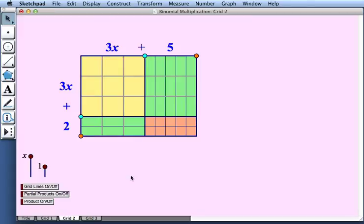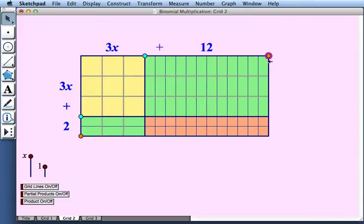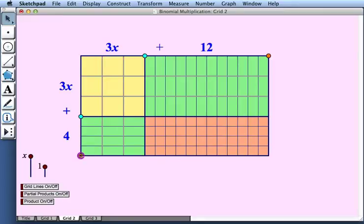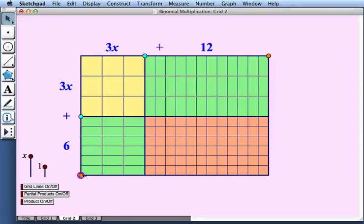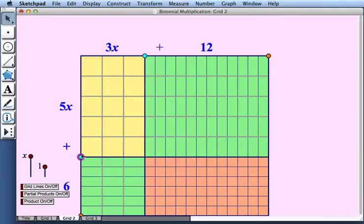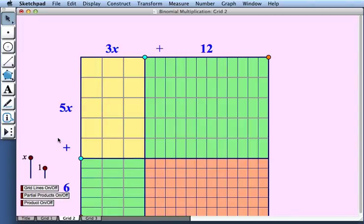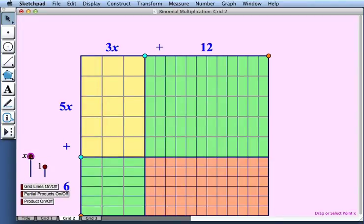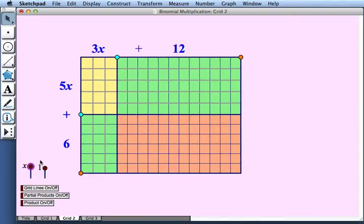In our second grid not only can we change the constants being added to x we can also change the coefficients in front of x. So if I drag the blue point I can go from 3x to 4x to 5x and so on and I can also as before scale my picture so I can show more.